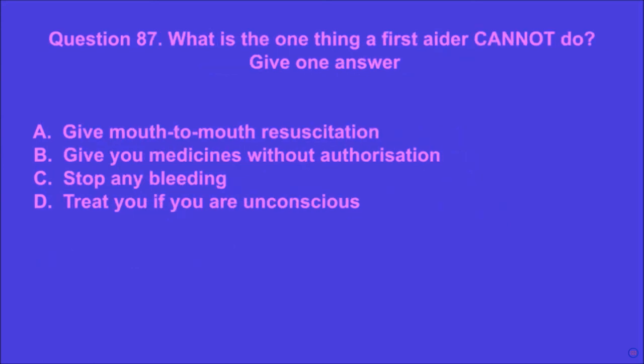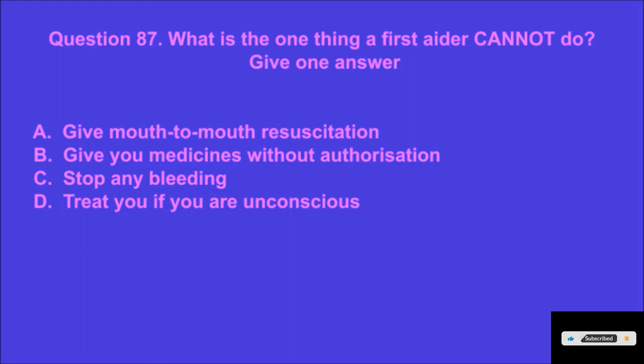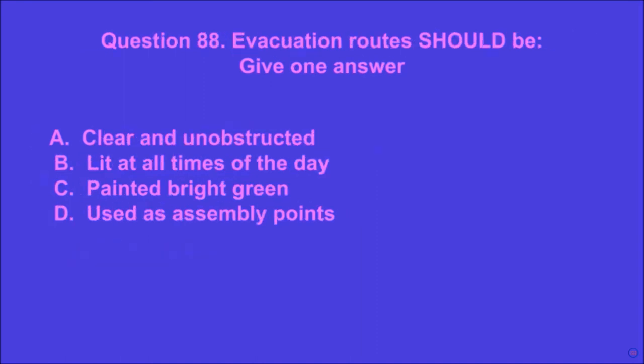Question 87: What is the one thing a first aider cannot do? Give one answer. A: give mouth-to-mouth resuscitation, B: give you medicines without authorization, C: stop any bleeding, D: treat you if you are unconscious. B is the correct answer.